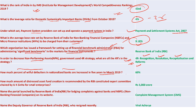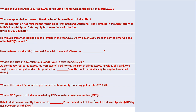The percentage of willful defaulters in nationalized banks has increased by up to 60% in the last five years to March 2019. A 5,000 crore distress asset fund creation was recommended by RBI expert panel UK Sinha for small enterprises. RBI launched a Complaint Management System for lodging complaints against banks and NBFCs on its website. Viral Acharya has resigned from RBI.